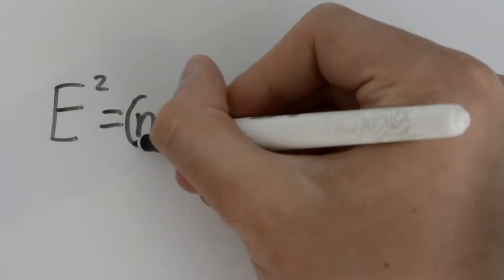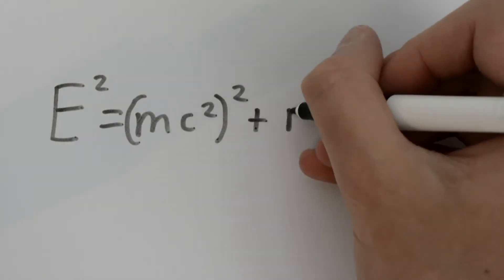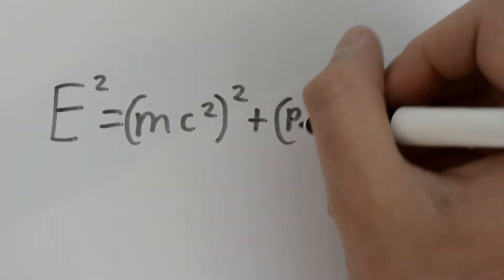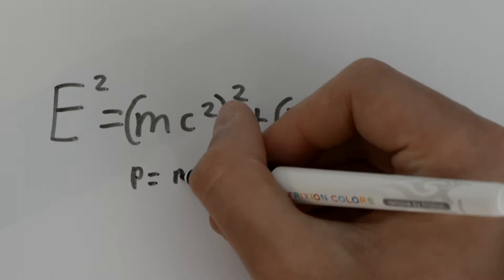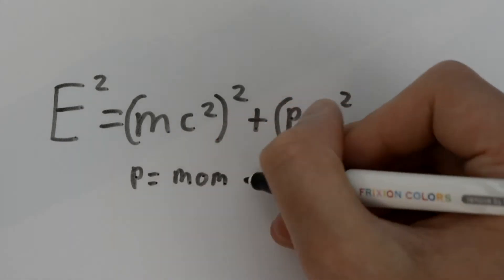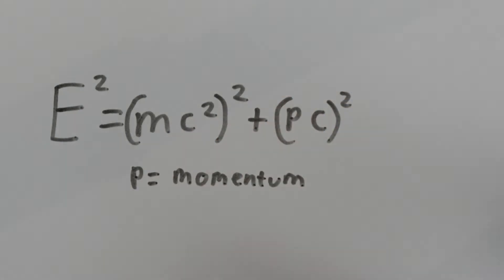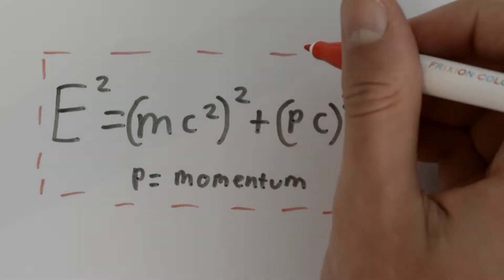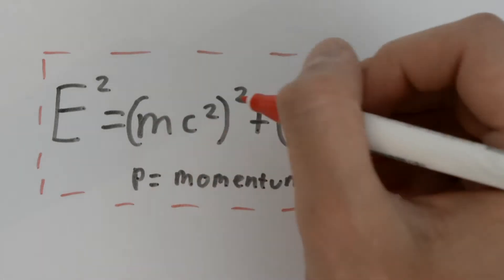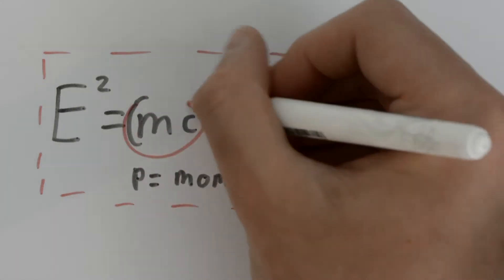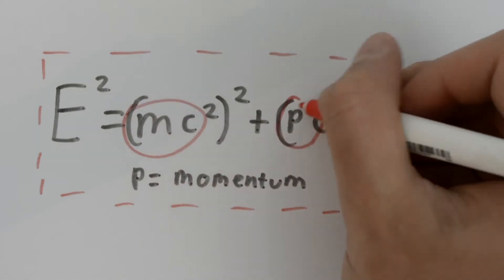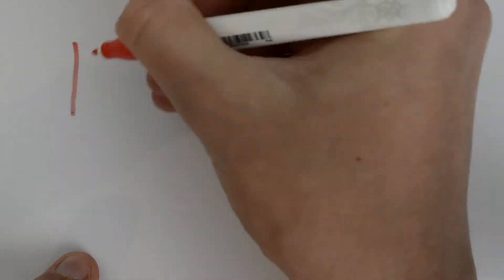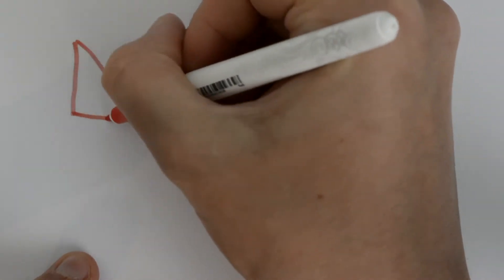And here it is: E squared equals (mc squared) squared plus (pc) squared. Here, p is the momentum of a particle and c is still the speed of light. This equation tells us that the energy of a particle is directly related to both its mass and speed, since momentum is related to speed. To some of you this style of equation may look familiar.